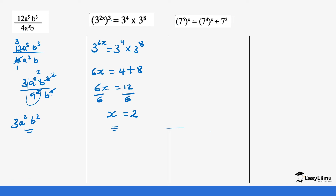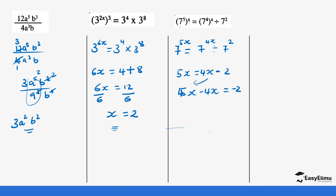For this question, 7 power 5x equals 7 power 4x divided by 7 power 2. Since they are in the same base 7, we work with only the indices: 5x equals 4x minus 2. Bringing like terms together: 5x minus 4x equals negative 2, so x equals negative 2.